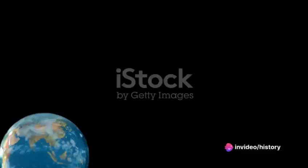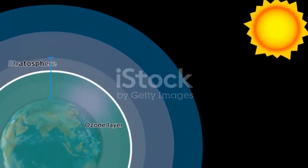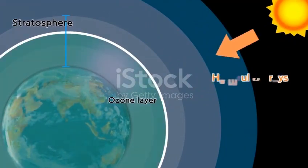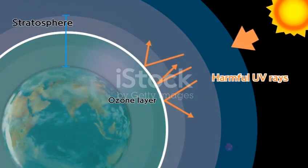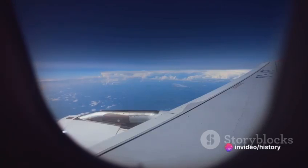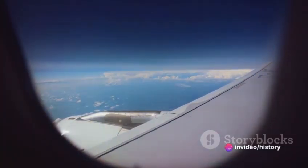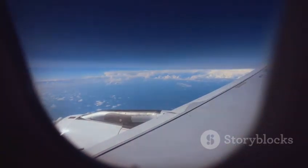The ozone layer, or ozone shield, is a region of Earth's stratosphere that absorbs most of the sun's ultraviolet radiation. It contains a high concentration of ozone, O3, in relation to other parts of the atmosphere, although still small in relation to other gases in the stratosphere.